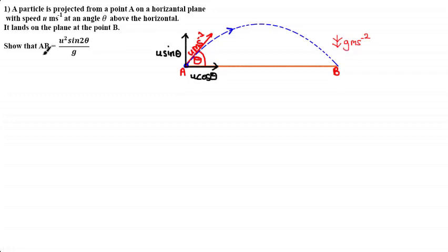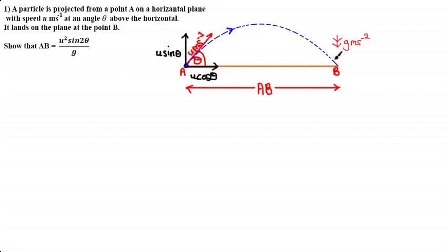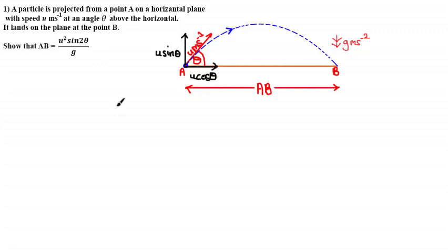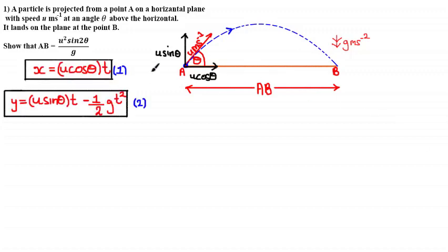Since AB appears in the equation we're trying to prove, we label the length AB in the diagram — the distance between points A and B. In this tutorial, rather than picking a point along the trajectory and using standard Suvat equations as in the previous tutorial, we'll use a variation: parametric equations that describe the horizontal and vertical motion of a projectile.